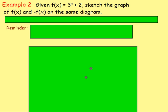Okay, moving on to example number 2. Given f of x equals 3 to the power of x plus 2, sketch the graph of f of x and negative f of x on the same diagram. So it's a trickier example here, but we want to start off sketching f of x, or just 3 to the power of x plus 2.